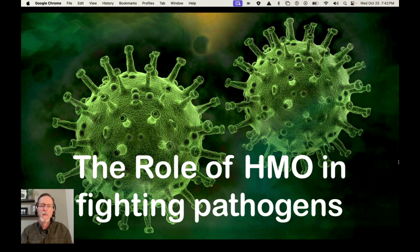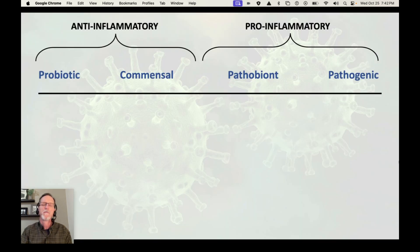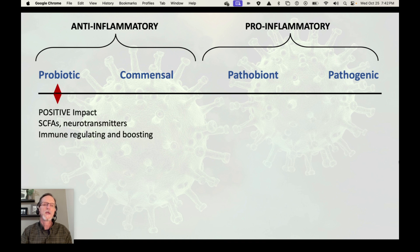Before we talk about pathogens, let's talk about the various classifications of gut bacteria. There are four basic classifications: probiotic, commensal, pathobionic, and pathogenic. The first two are broadly speaking anti-inflammatory, and the other two are broadly speaking pro-inflammatory. So one is relatively good, one is relatively bad. But let's get into some rough definitions so we understand.